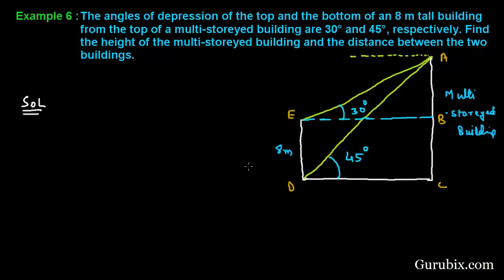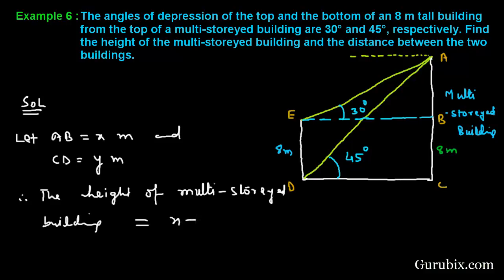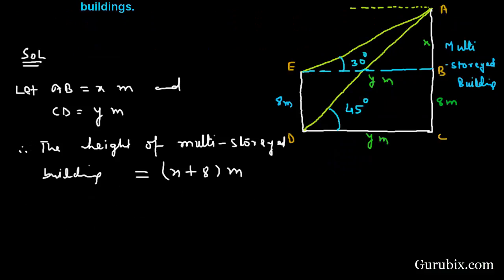Since BCDE is a rectangle, and we know that in a rectangle the opposite sides are equal, so if DE is 8 meters then this side will also be 8 meters. Here we let AB equals x meters and CD equals y meters. Therefore, the height of the multi-story building will be x plus 8 meters. This side is x, this side is y meters, so this side will also be y meters.